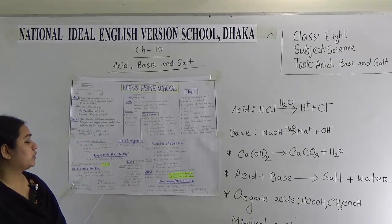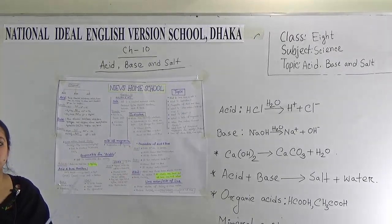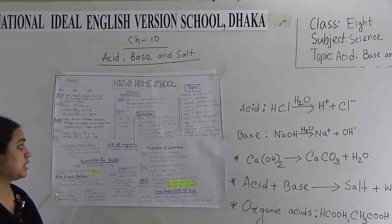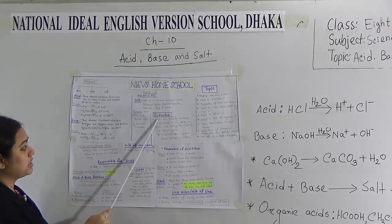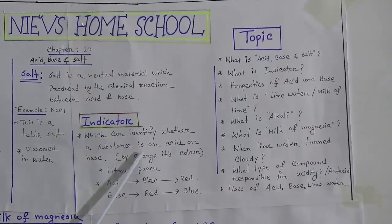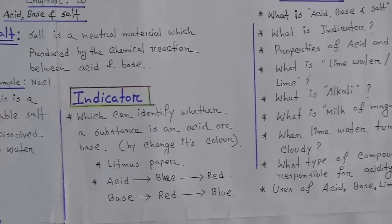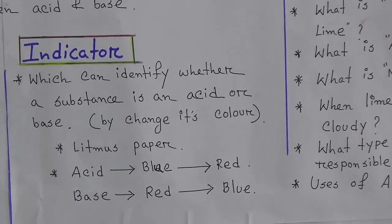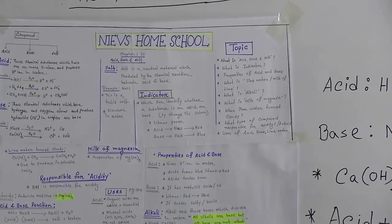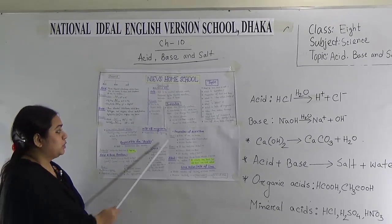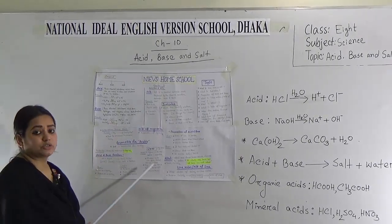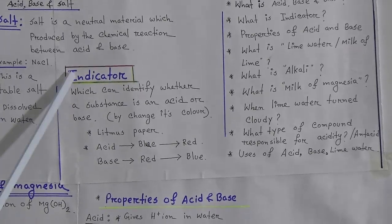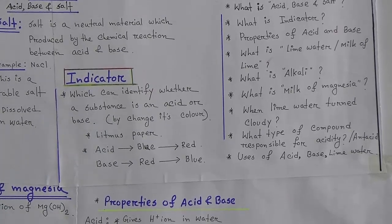Now we are going to our next topic: what is indicator. Indicator is a very interesting thing. It is a type of substance which can identify whether a material or substance is an acid or a base by changing its color. It is called an indicator. The example of indicator is litmus paper. There are two types of litmus paper: one is blue litmus paper and another is red litmus paper. If we put blue litmus paper in an acid solution, it turns red. But if we put red litmus paper in a basic solution, it turns blue.